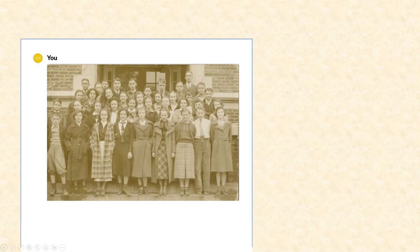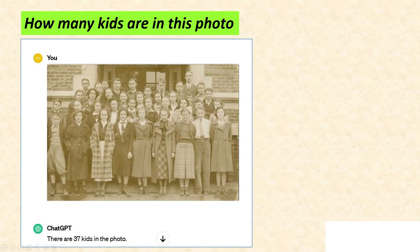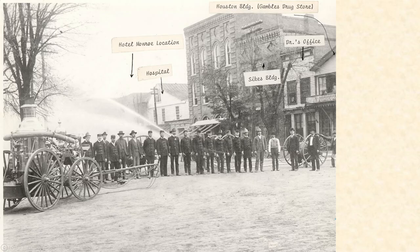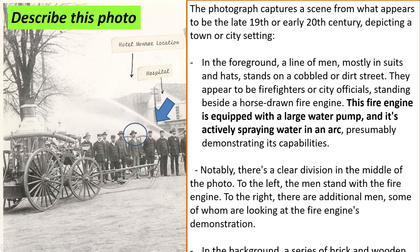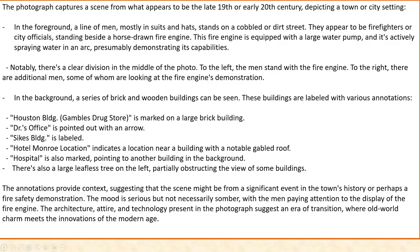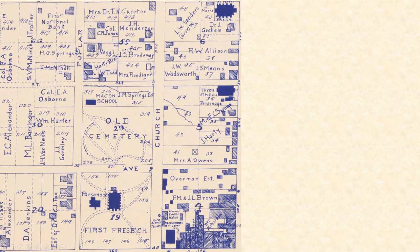Let's look at image analysis. This is a picture of my aunt from school — I think it's back in the '30s. I said how many kids are in this photo, and it said 37. I had to count, and I counted 38 people, but it turns out one guy is an adult, so it got it right. Here's another photo from the early 1900s of Monroe — it's the fire department. That's my great-grandfather, George Washington McCorkle. Notice the fire hose is spraying in the background. I just said describe this photo, and it said the fire engine is equipped with a large pump actively spraying water in an arc. It identified all the buildings, talks about the dress, and editorializes saying the mood is serious, not necessarily somber.